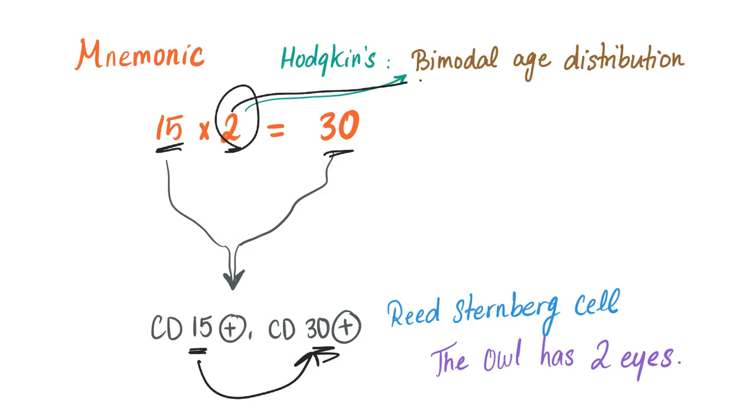2 is the bimodal distribution. 15 and 30 are the cluster of differentiation.